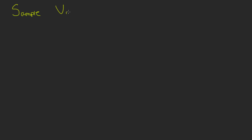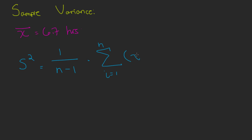Now we'll look at sample variance, which is the measure of variability in a piece of data. We'll note that x-bar equals 6.7 hours. Sample variance follows a similar formula, denoted as s-squared equals 1 over (n minus 1) multiplied by the summation from i equals 1 to n of (x sub i minus the sample mean, which is 6.7) squared. Note that x-bar is constant throughout the calculation.